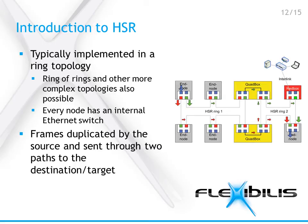In HSR, the source node duplicates the frames and sends them to the destination using two different paths, as you can see in the picture. Even if one node or link breaks down, the packet still reaches the destination the other way.